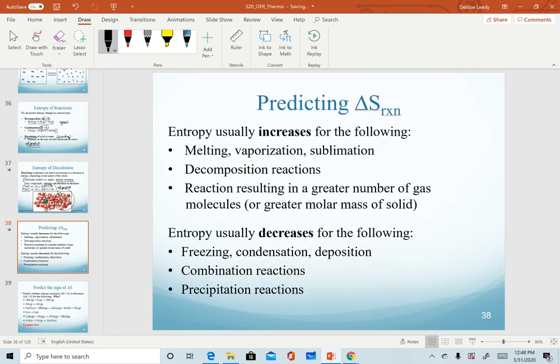So to summarize, when we are predicting the change in entropy for a reaction, entropy usually increases. This would be a positive value for melting, vaporization, or sublimation. This is where we're breaking molecules apart and looking at their IMFs. Decomposition reactions and reactions that result in a greater number of gas molecules or greater molar mass of a solid. And then of course the opposite processes we would predict to decrease and therefore have a negative sign.